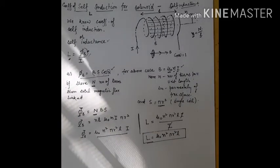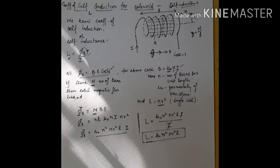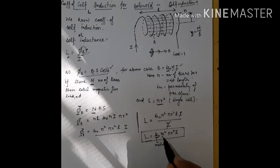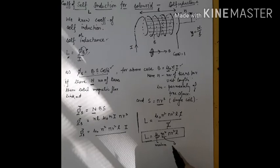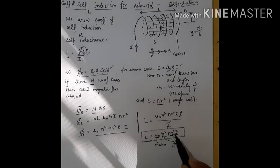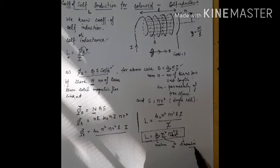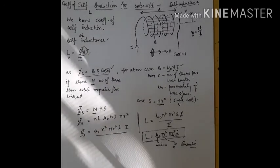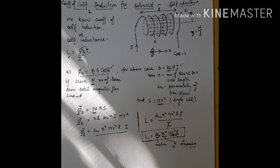We can see that the coefficient of self-induction depends upon the medium (μ₀), the number of turns (n), and the dimensions — radius and length. So the coefficient of self-induction depends upon the medium, number of turns, and its dimensions.